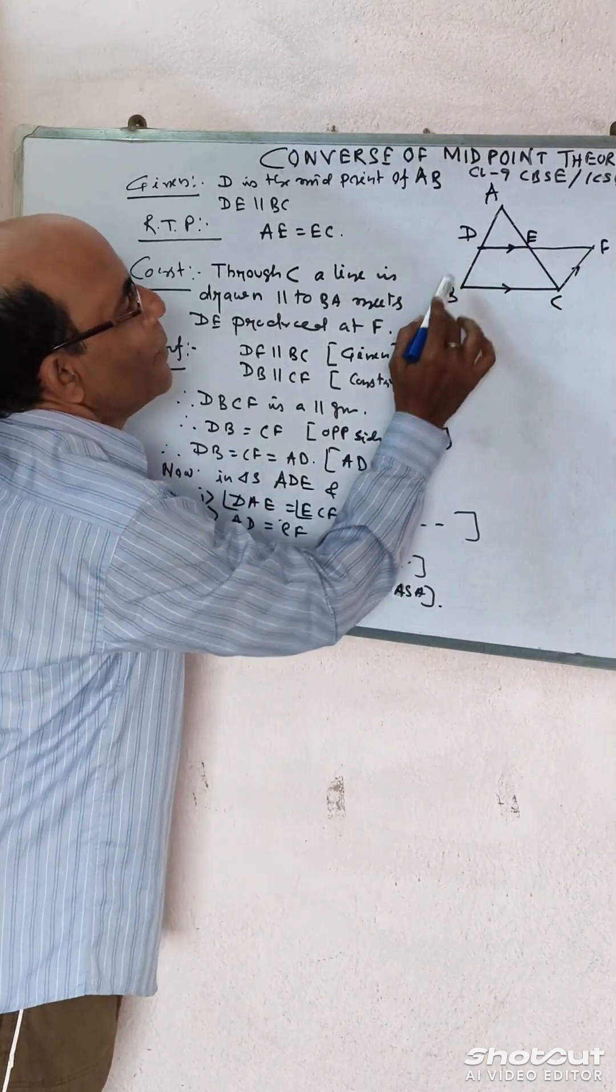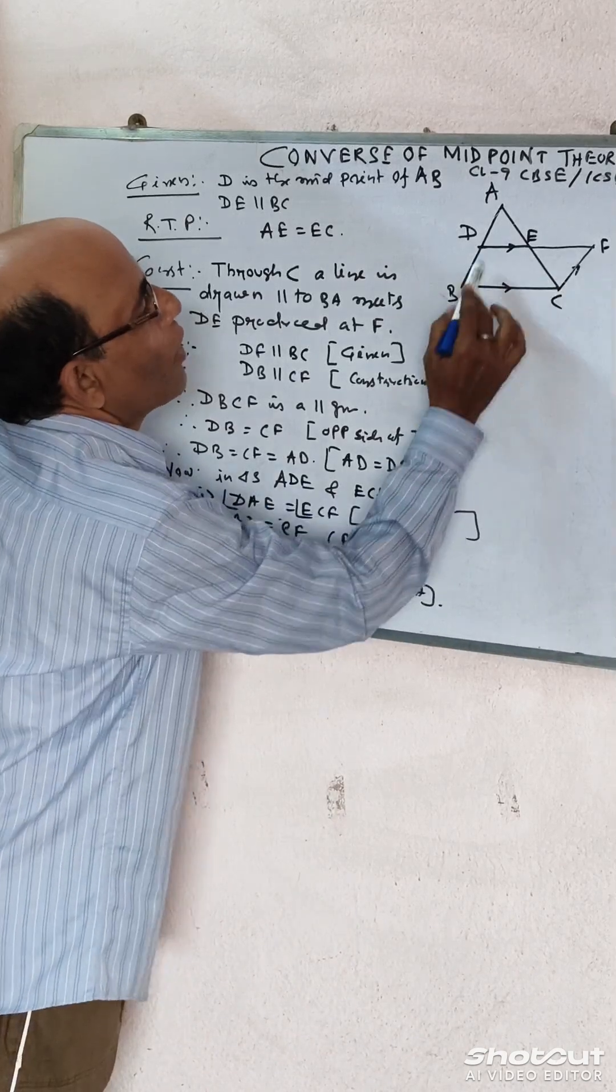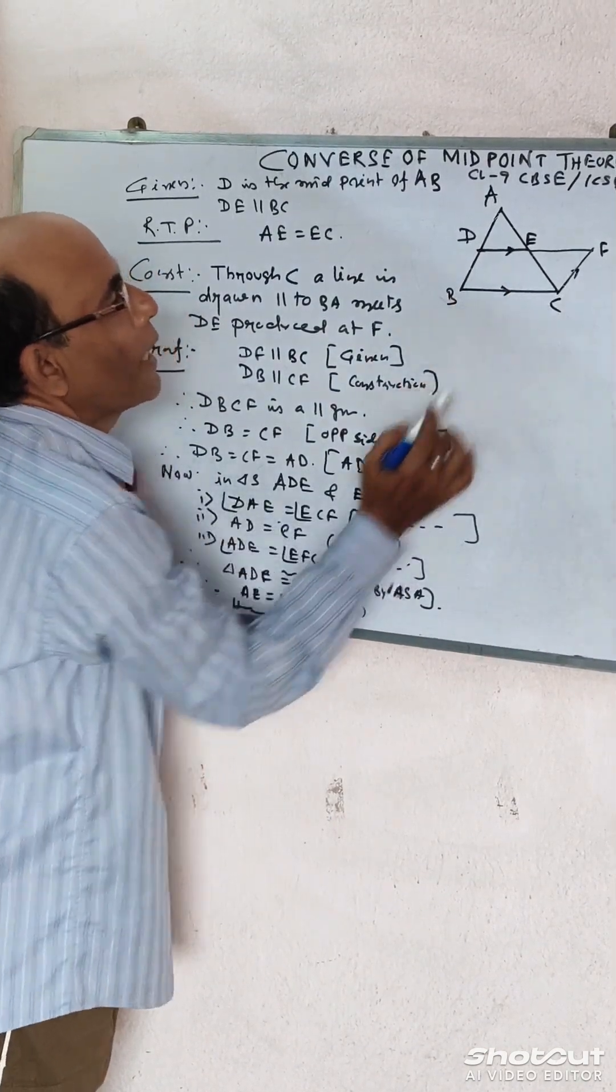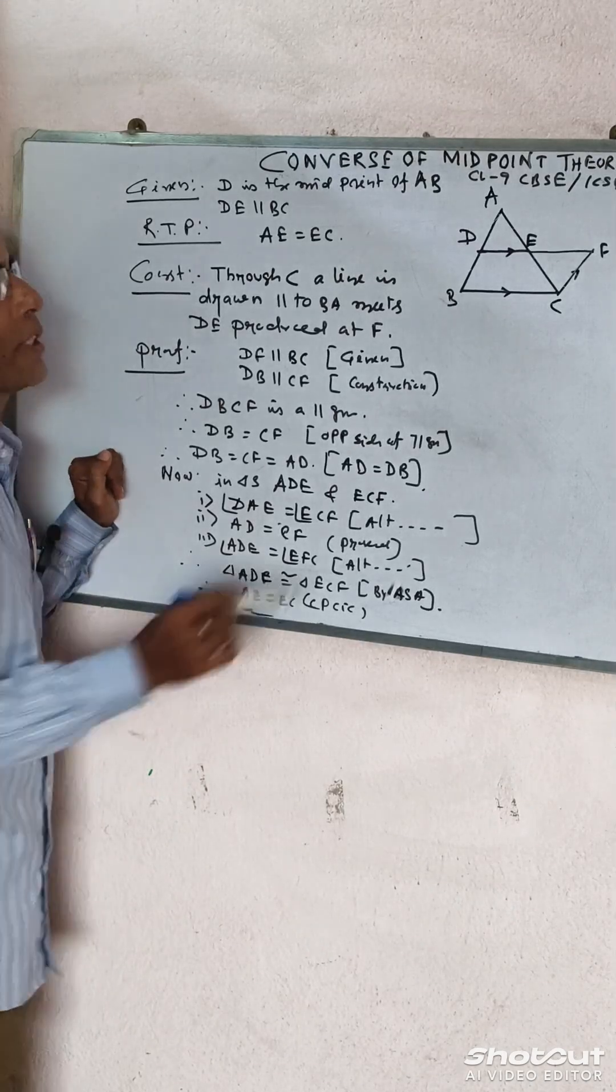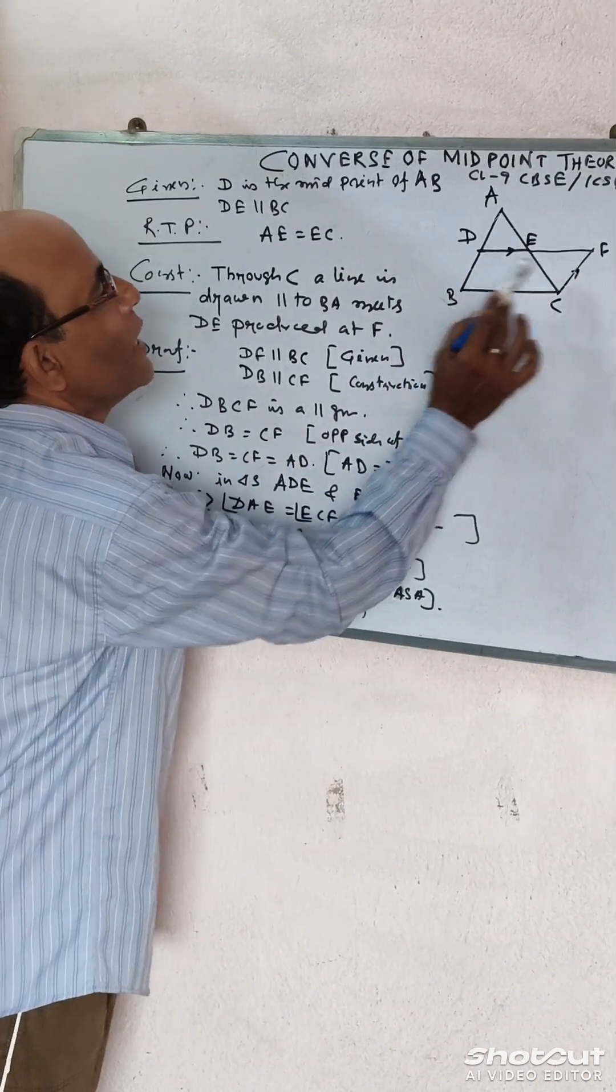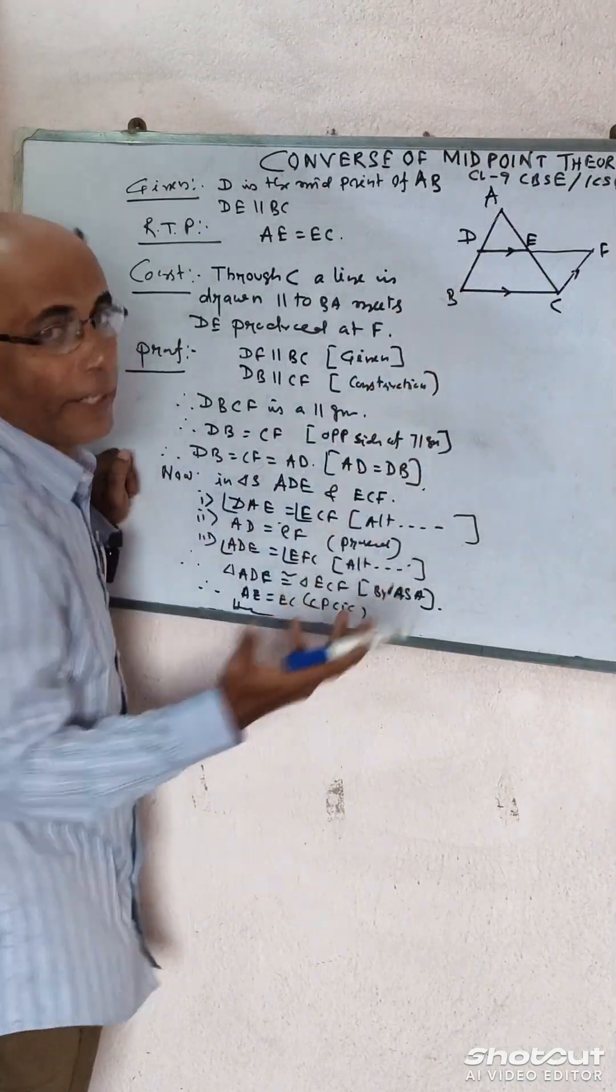In this quadrilateral DBCF, DF is parallel to BC given, and DB is parallel to CF by construction. Therefore this is a parallelogram. Therefore CF equals DB, opposite sides of parallelogram, and DB equals AD.